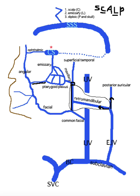Once they're in that space, they can travel through the emissary veins into the diploic veins, which go through the periosteum layer and the skull itself. The cancellous portion of the skull bone is referred to as the diploe, which is where diploic veins get their name.